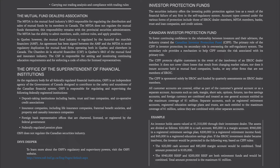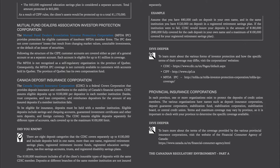Here's an example. An investor holds assets valued at $1,310,000 through their investment dealer. The assets are divided as follows: $20,000 in a cash account, $85,000 in a margin account, $940,000 in a registered retirement savings plan, $200,000 in a registered retirement income fund, and $65,000 in a registered education savings plan. If the IIROC investment dealer became insolvent, the $20,000 cash account and $85,000 margin account would be combined for a total of $105,000 protected. The $940,000 RRSP and $200,000 RIF are both retirement funds and would be combined, with a maximum of $1 million protected. The $65,000 RESP is a separate account, fully protected. As a result, the client's assets would be protected up to a total of $1,170,000.